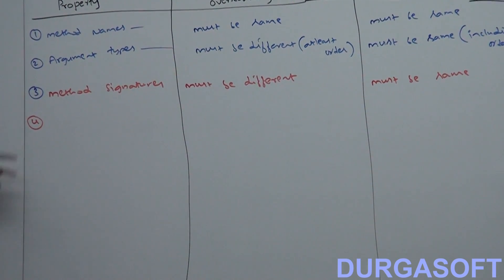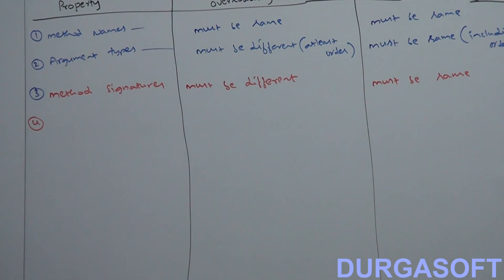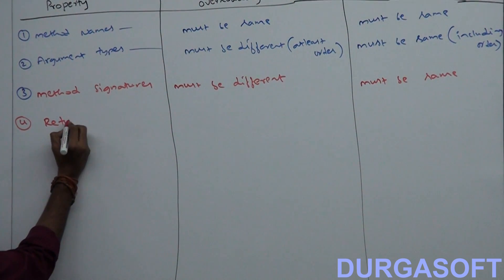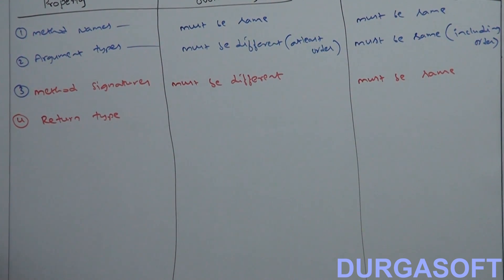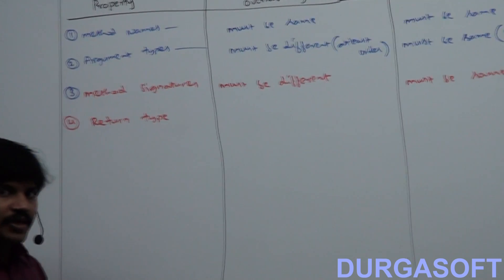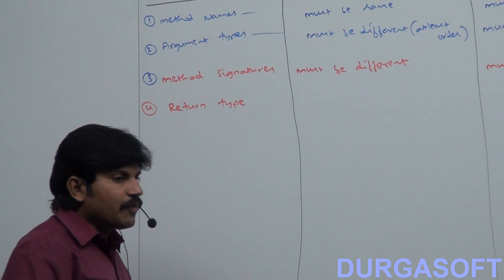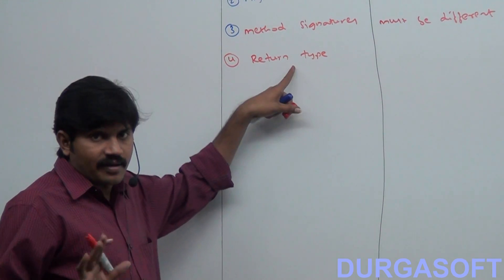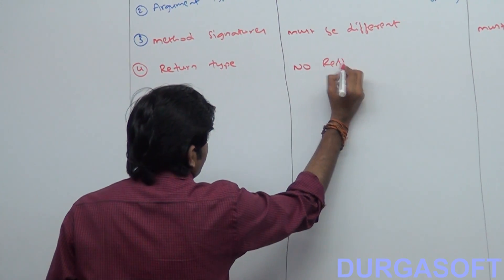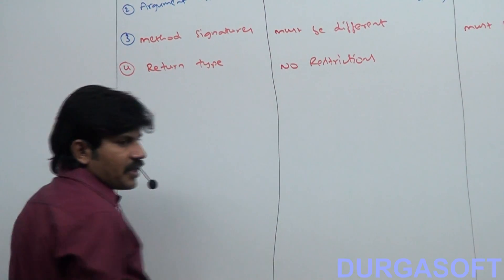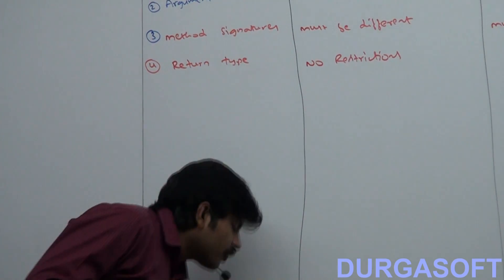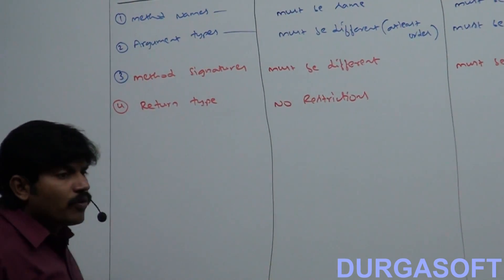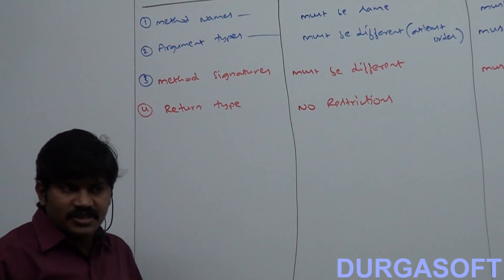So method names, argument types, and method signatures are covered. Now the next point — take special care. What about return type? In overloading, methods may have different return types or the same return type. There are no restrictions at all for the return type concept in overloading.